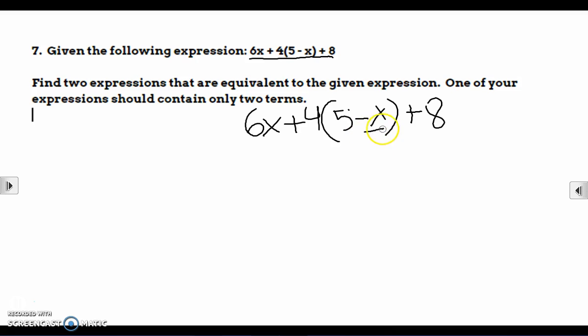As you can see, we can't do that because that's a variable and we can't subtract 5 and a variable because you don't know the number for the variable.